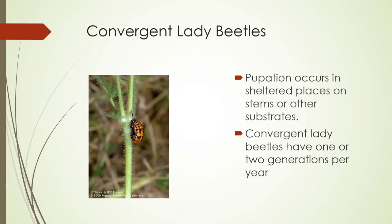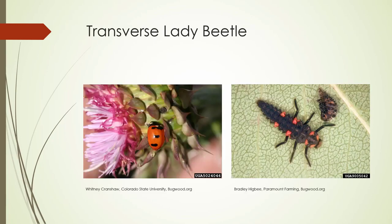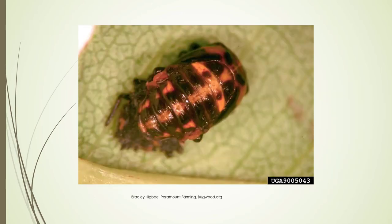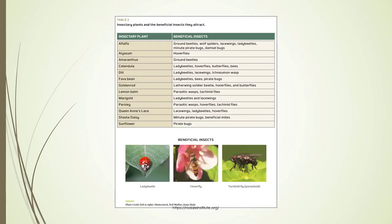The convergent lady beetle has one or two generations per year. The transverse lady beetle attacks psyllids specifically, along with aphids, but is increasingly rare because the seven-spot lady beetle is outcompeting it — and the transverse is native to our area. It's one of the first to arrive in orchards, making it an early pest manager, with one to three generations per year in the Pacific Northwest. Plants that attract lady beetles include calendula, dill, fava bean, marigolds, and Queen Anne's lace, among many others.